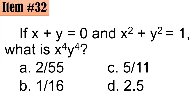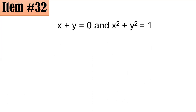Next: if x plus y equals zero and x squared plus y squared equals one, what is x to the fourth plus y to the fourth? Is it two over fifty-five, one over sixteen, five elevenths, or two point five? To answer this question we will do algebraic manipulation — we will square both sides of the first equation.